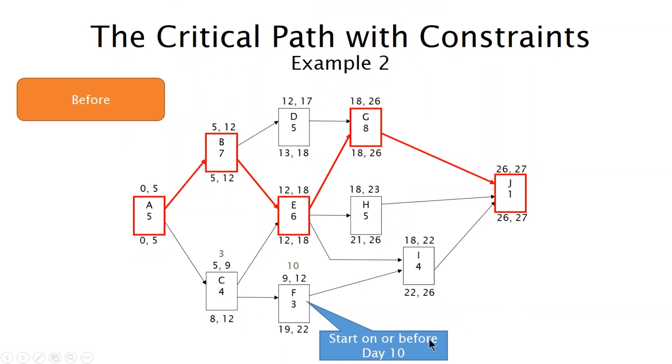In this case we're applying a start on or before constraint day 10 to activity F. So activity F currently starts on day 9 and we're going to push it one day into the future. And just notice it has 10 days of total float. And the result there as you can see is not much happened. So in the second example where we are using a constraint to move an activity within its available total float, this is the proper way to use constraints. We want to avoid using constraints to alter critical path.